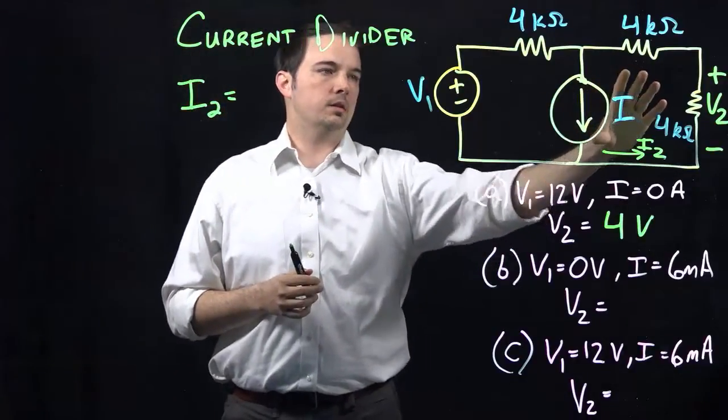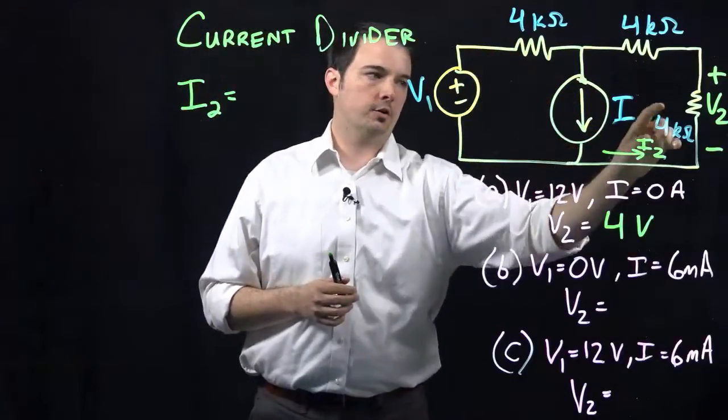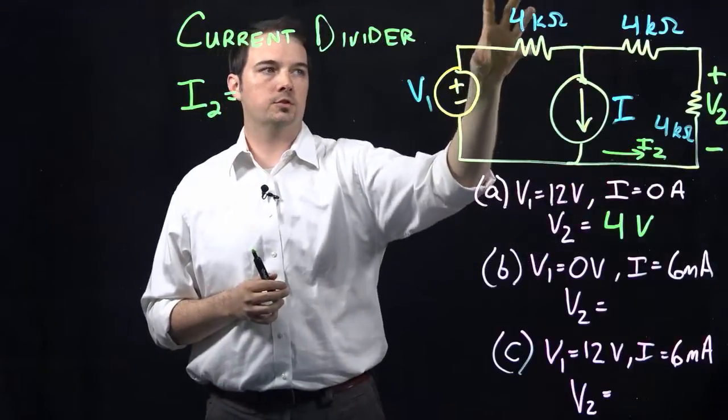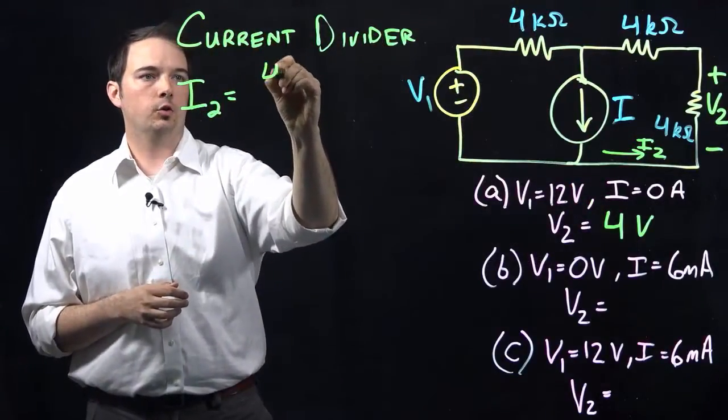So now in contrast to the way the voltage divider is set up, here we look at the opposite branch. So we want to find the current here, but we look at the opposite branch to find the value of the resistance there, which is the 4K.